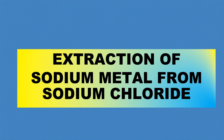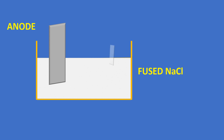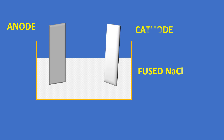Now let us see the extraction of sodium metal from sodium chloride. Consider fused NaCl as the electrolyte, a graphite plate as the anode, and a steel plate as the cathode.